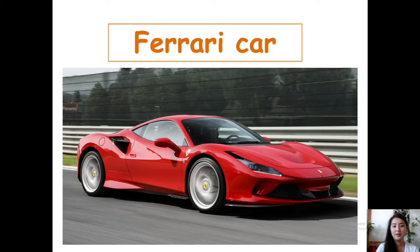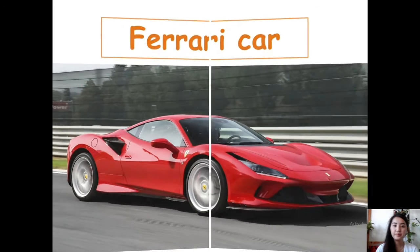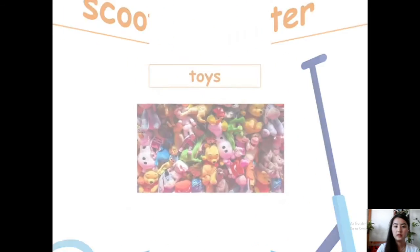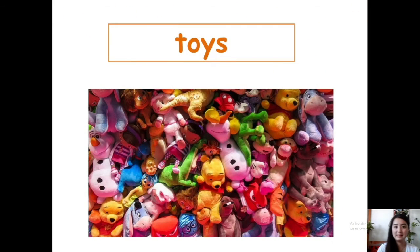Ferrari car. We don't need a Ferrari car to survive, so it's a want. Scooter. We don't need a scooter to live or to survive, so scooter is a want. Next, toys. We don't need toys to survive — toys are wants.